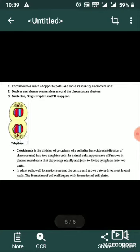Chromosomes at each opposite pole lose their identity as discrete units. The nuclear membrane reassembles around the chromosome clusters. The nucleolus, Golgi complex, and endoplasmic reticulum reappear. This is telophase.